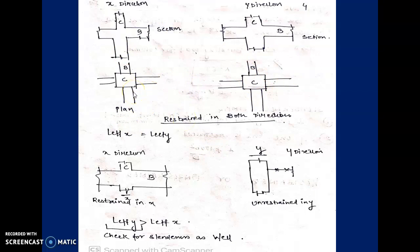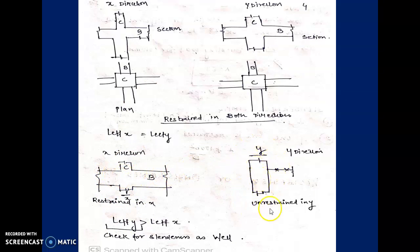Why does it matter whether the column is tied in both directions or only one? For the first figure, effective length in x equals effective length in y because the column is tied in both x and y directions. Now in the second figure, in the x-direction the beam passes in both directions, but at the same level in y there is no beam. So the effective length in the y-direction will be higher than in the x-direction.